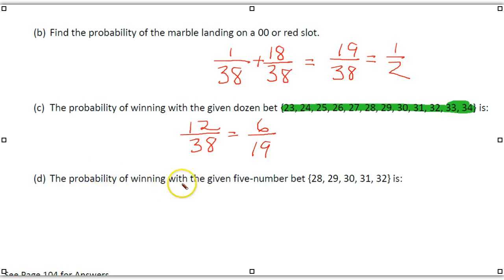And the probability of winning with the given five-number bet. Once again, we have five numbers. They could be any five numbers, actually. So, that would be 5 out of 38. So, again, knowing the makeup of the wheel and then putting your probability together.